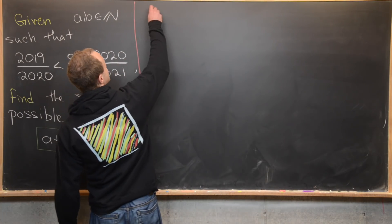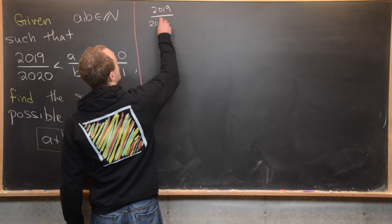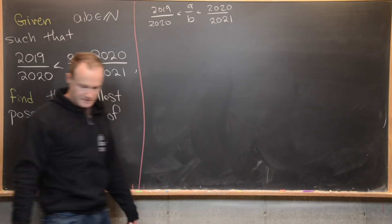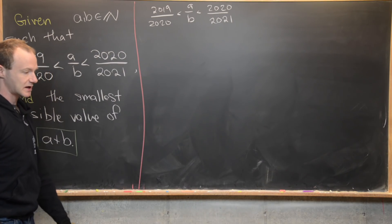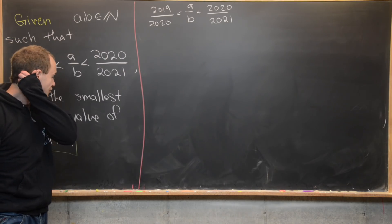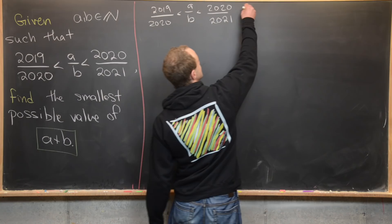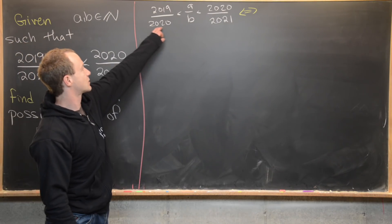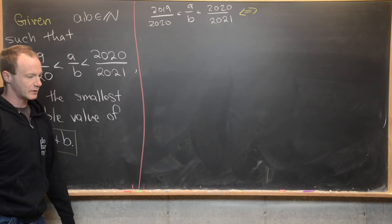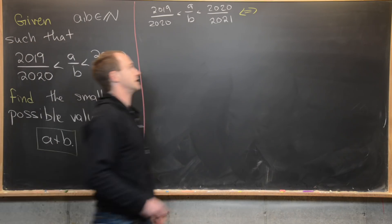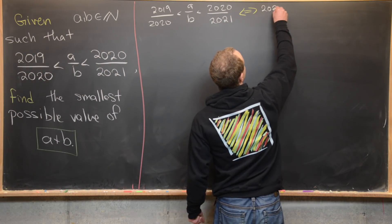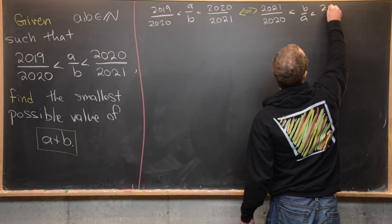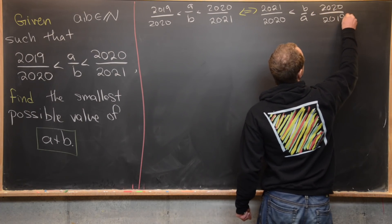So our inequality is: 2019/2020 < a/b < 2020/2021. The first thing I'll do is take the reciprocal of all parts of this inequality. Recall that taking the reciprocal changes the order of the inequality, so we get: 2021/2020 < b/a < 2020/2019.